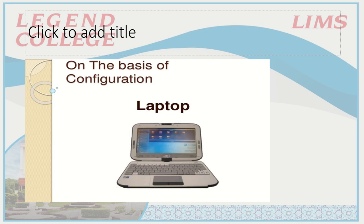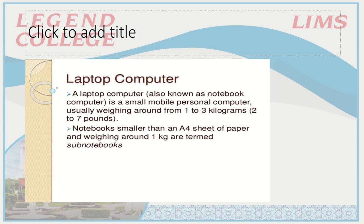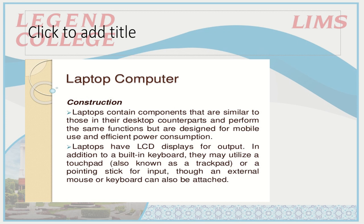The second configuration type is the laptop. A laptop computer, also known as a notebook, is a small mobile personal computer usually weighing from 1 to 3 kg. If we have a notebook about the size of a paper sheet, weighing a maximum of 1 kg, we call it a notebook. Laptops contain components similar to those in desktop computers and perform the same functions, but are designed for mobile use and efficient power consumption.